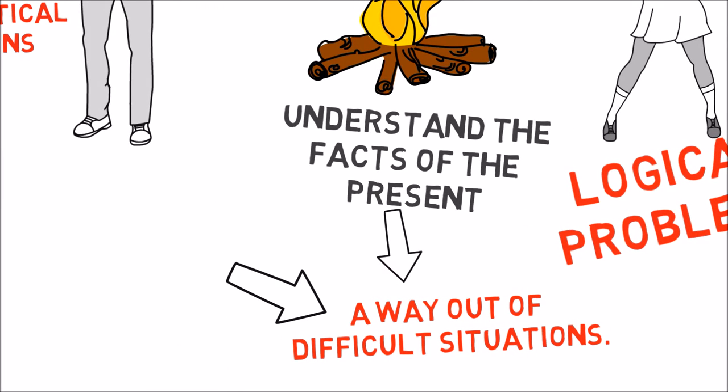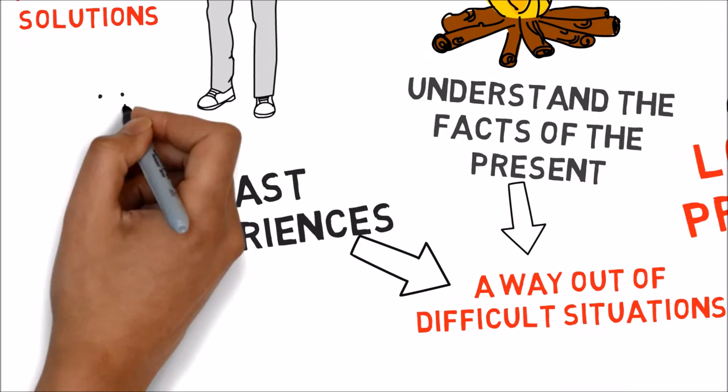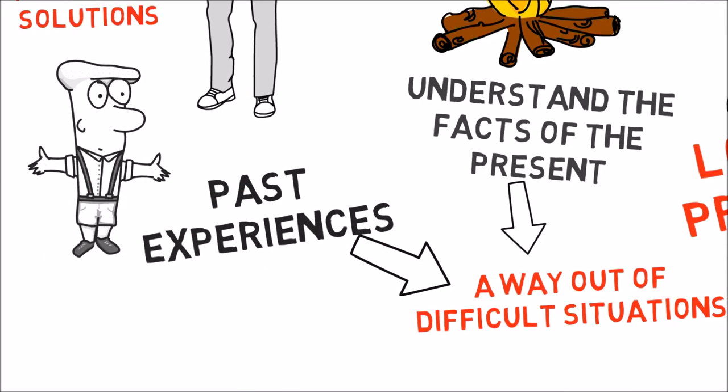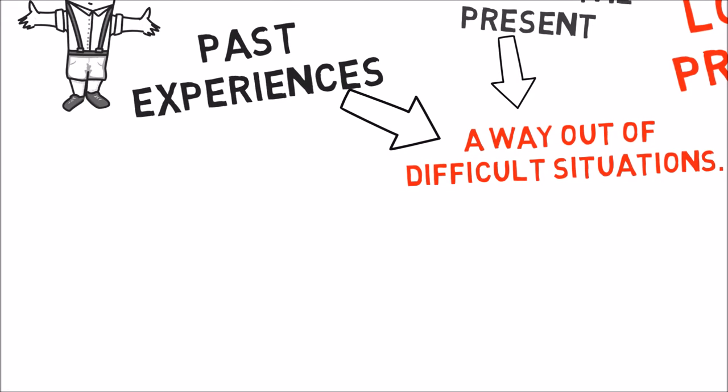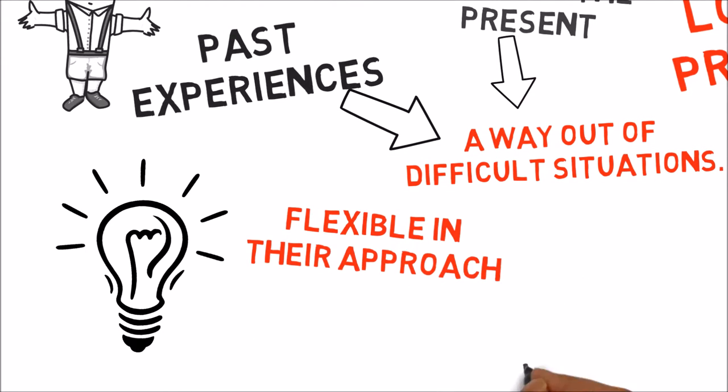The ESTP relies on past experiences to choose the best approach for the situation at hand. ESTPs are concrete and hands-on and have a kinetic sense of how things work. Although ESTPs may have trouble envisioning abstract ideas, they are flexible in their approach. If something sounds logical, they are usually willing to give it a try.